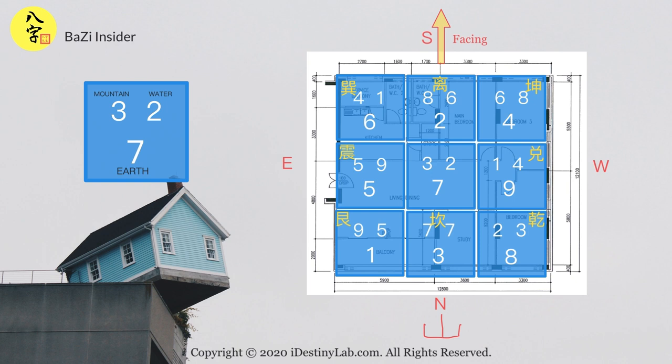Inside a palace, one would normally see 3 numbers. The biggest number or star is what we call the Earth Star, or some call it the Bay Star. The number on the left is called the Mountain Star, or some call it the Sitting Star. And the number on the right hand side is what we call the Water Star, or the Facing Star. Each number indicates a type of flying star.